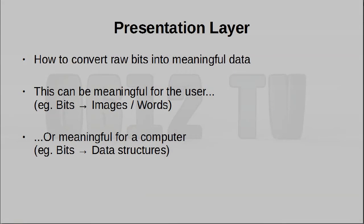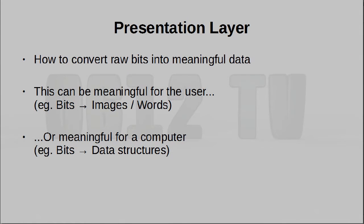Next up is layer six, the presentation layer. This is when data that's actually received over the network gets converted into something meaningful. This can actually refer to quite a wide range of operations — things like encryption and decryption, as well as encoding and decoding into text and images. When we say we want to turn the information into something meaningful, it could be meaningful for the user to actually consume, or meaningful for another program to actually process.